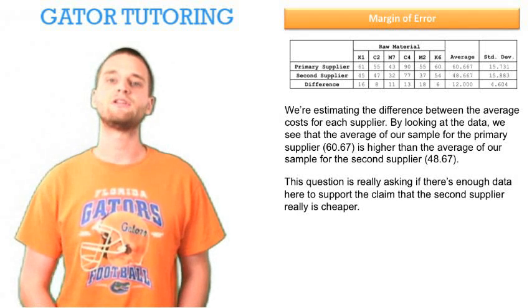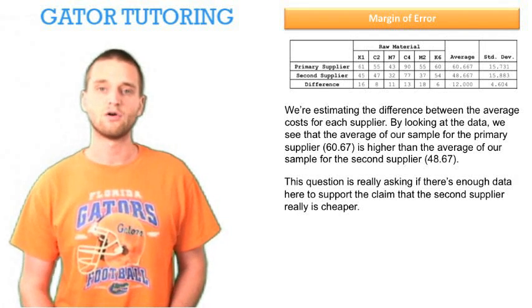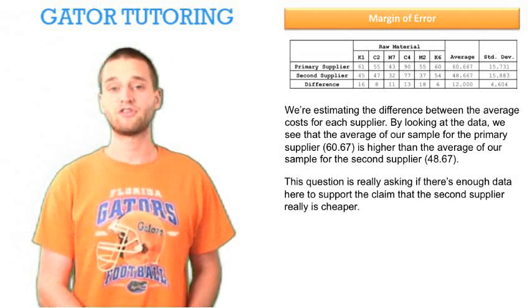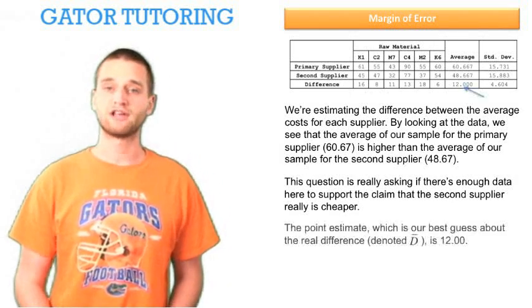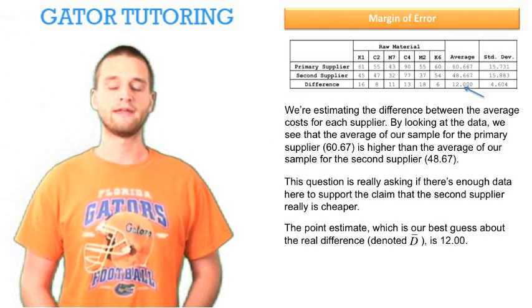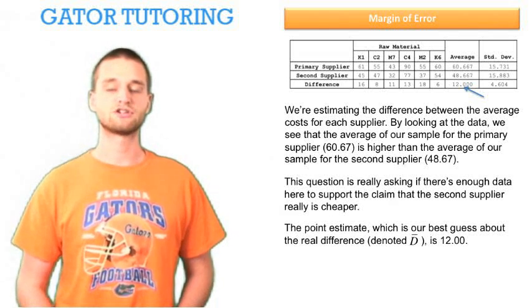So we basically need to see, based on our data, what our margin of error is for saying that the primary supplier costs more. And the question gives us that and tells us that the margin of error is actually $11.